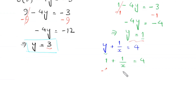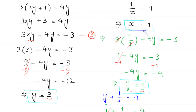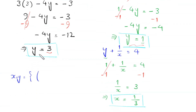We put y equals 1 into equation 2: 1 plus 1/x equals 4. Subtracting 1 from both sides: 1/x equals 3, which implies x equals 1/3. So the final set of solutions are: first pair (x, y) equals (1, 3), and second pair (x, y) equals (1/3, 1).